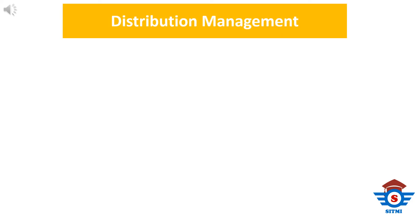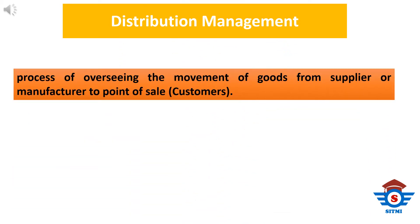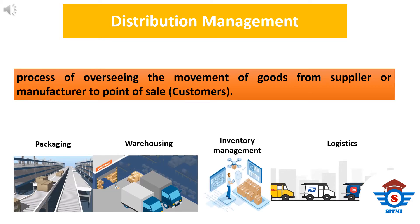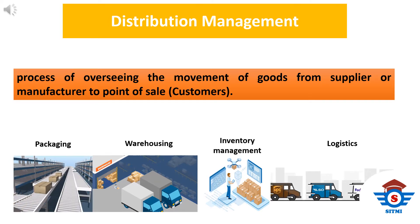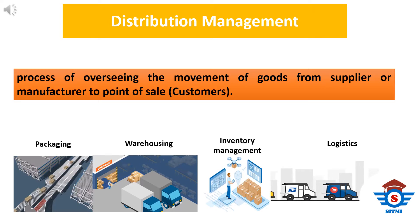Let's move to the next function, which is named Distribution Management. Distribution management refers to a process of overseeing the movement of goods from suppliers or manufacturers to the point of sales. It includes multiple activities and processes like packaging, warehousing, and logistics.